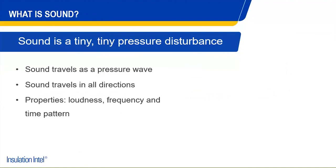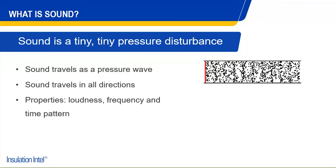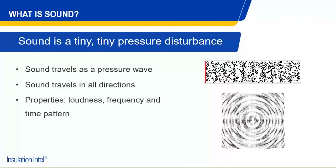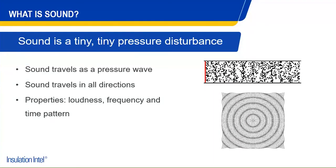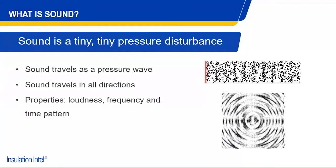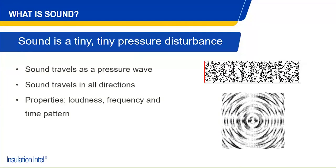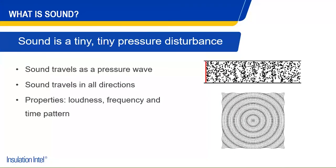What is sound? Essentially, sound is tiny little pressure disturbances in the air. Whether it's a vibration or some type of impact, it creates a pressure wave that travels through the air and gets received by your eardrum. Sound needs a medium to transfer — typically air or water. If we're in a vacuum where there is no physical medium, sound does not transfer. Sound travels in all directions, which can make it particularly difficult to control when we're trying to reduce or block its transmission from source to receiver.